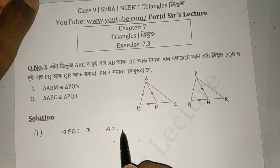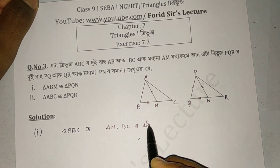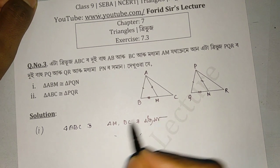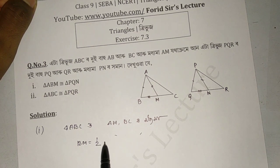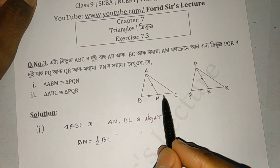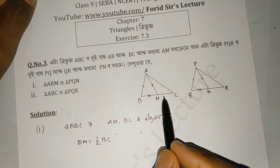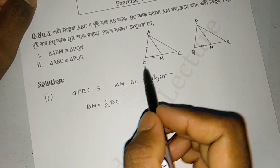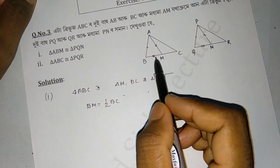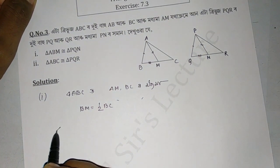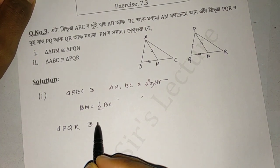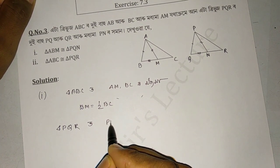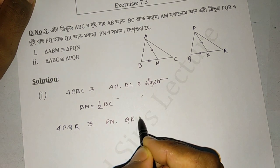For the solution, since M is on BC and AM bisects angle A, we can write BM equal to half of BC. This is how we establish the first relationship.